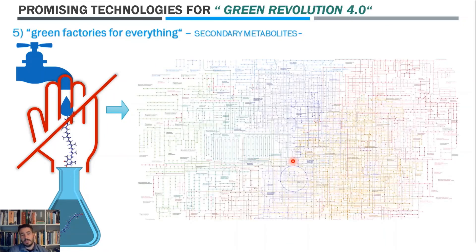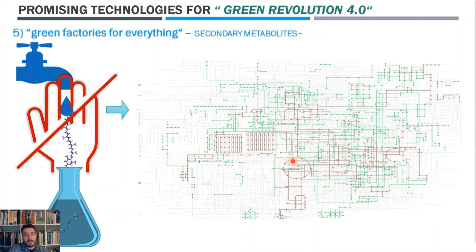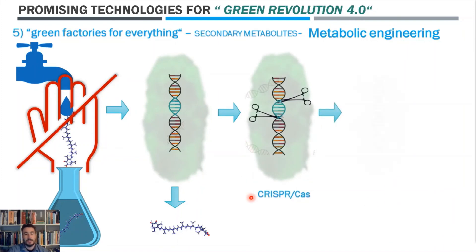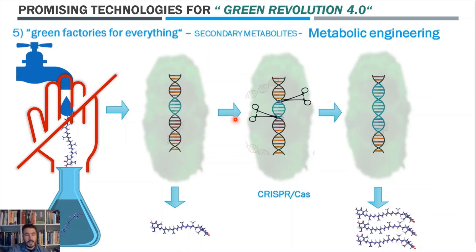CRISPR technology could be used as the main tool for effective remodeling of metabolic pathways — we are talking about metabolic engineering. Using this technique, it is possible to directly or indirectly modify many pathways to change one or more enzymatic reactions in biological reactions, in order to produce new compounds as well as improve the production of known compounds and increase their yield.